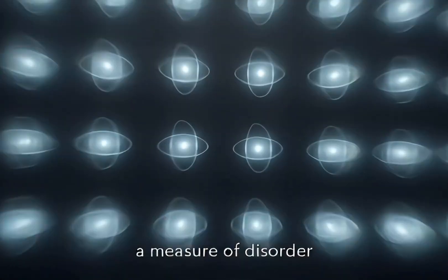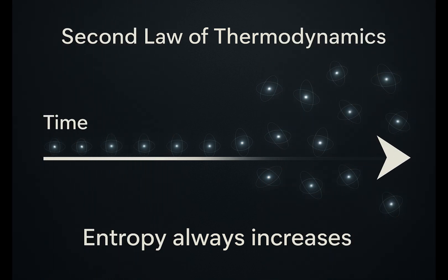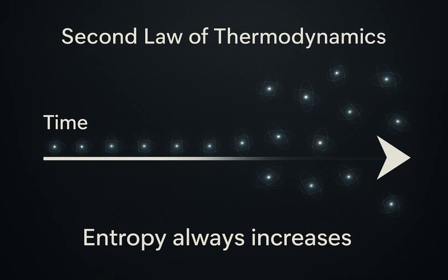Entropy is a measure of disorder. It tells us how energy spreads, how systems move from organized to random. In physics, it's part of the second law of thermodynamics. Entropy always increases.